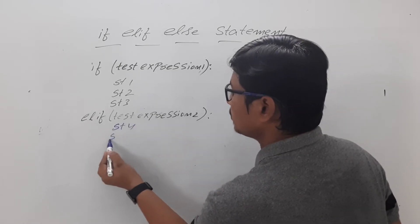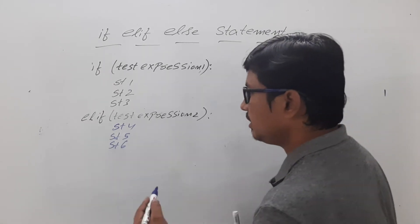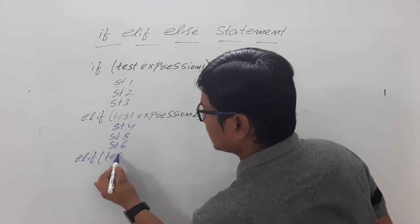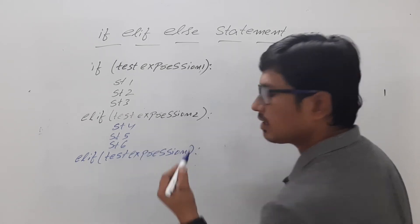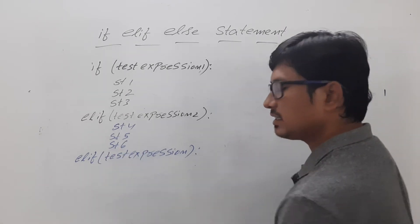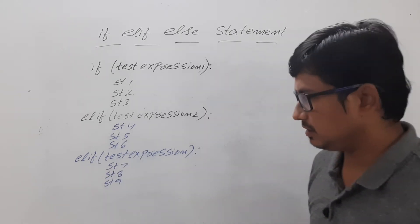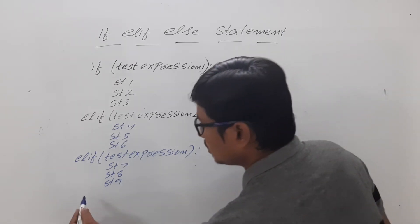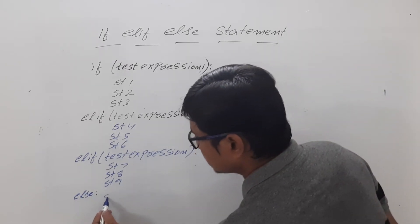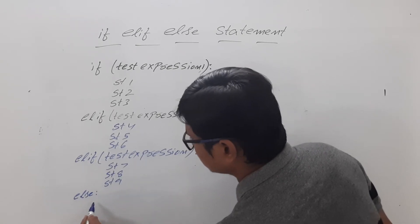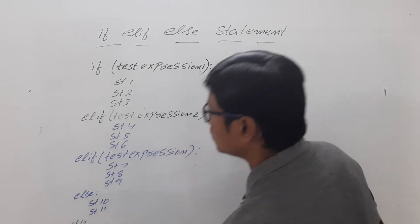Test expression two can be either true or false. If it is true you execute statement four, statement five, statement six. Even if this test expression is also false, you verify another test expression using another 'elif' with a condition. If that condition is true you execute statement eight, statement nine. If this is also false you use the 'else' block, then with indentation write statement ten, statement eleven.